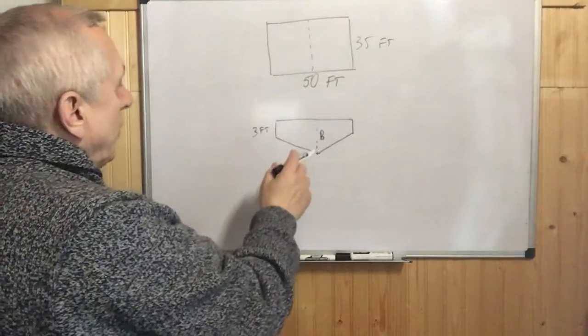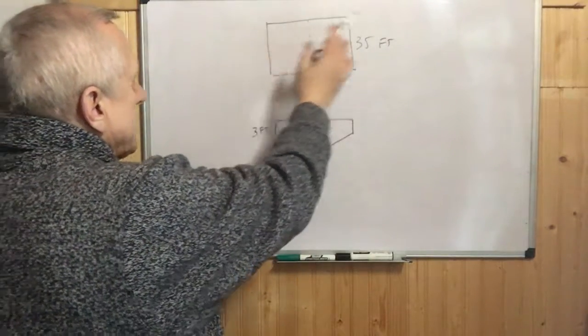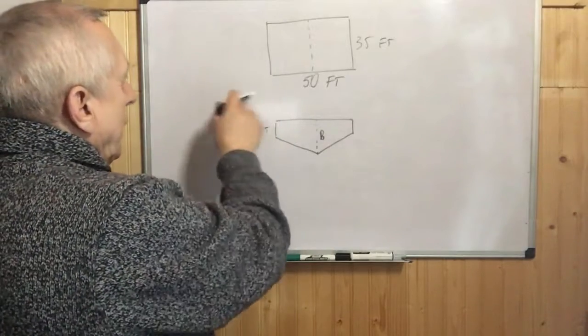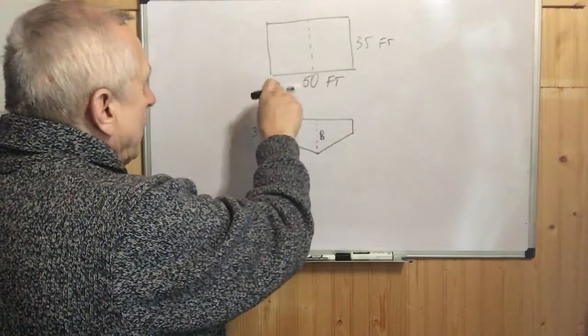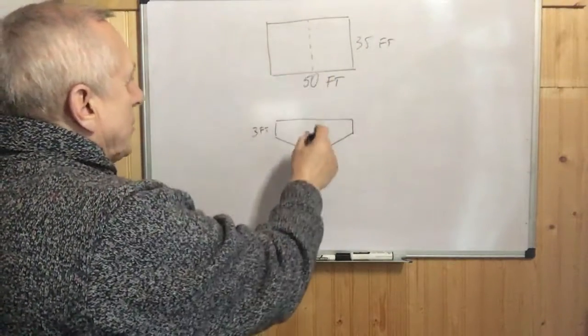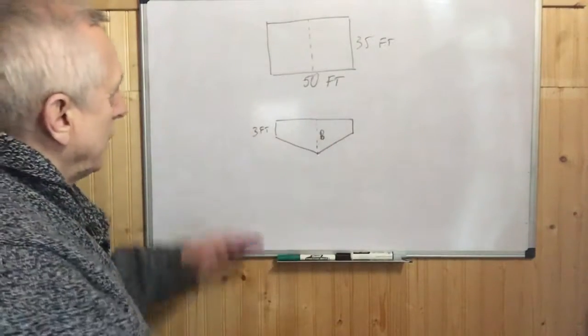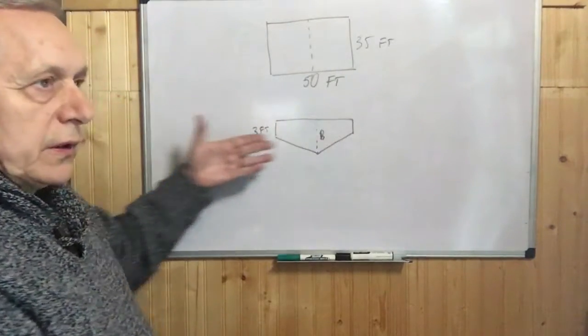On the sides, the depth of the pool is 3 feet, and then it goes down uniformly. In the middle it becomes 8 feet. I made the drawing here, seen from a horizontal section. This is the surface and this is the inside of the pool.